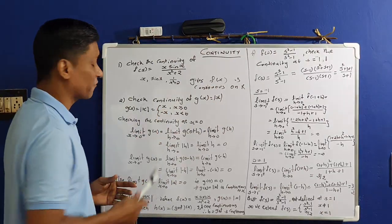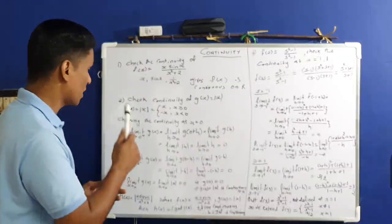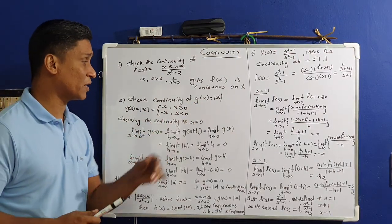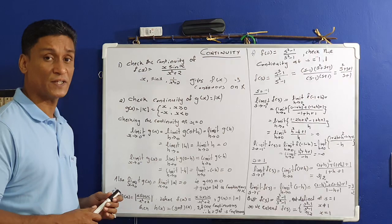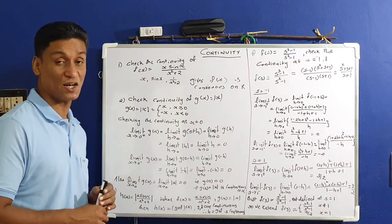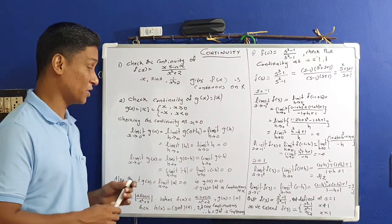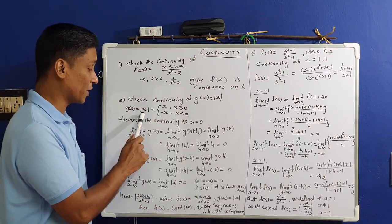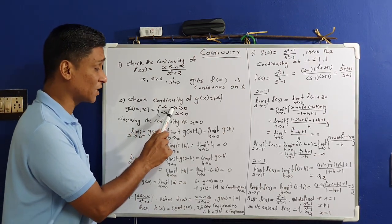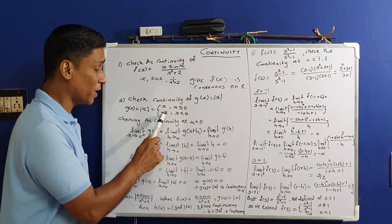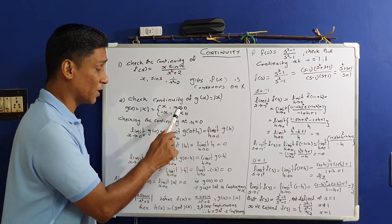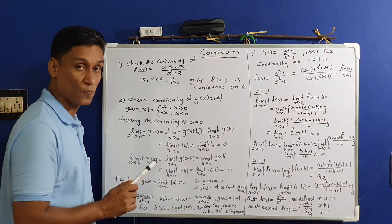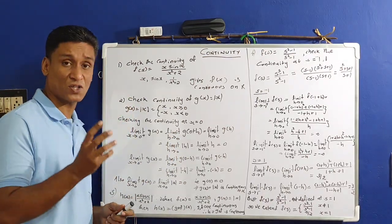That is our first simple example. Now come to the second example: check the continuity of g(x) = |x|. In general, the definition of mod x is: g(x) = |x| = x for x ≥ 0, and = −x for x < 0.